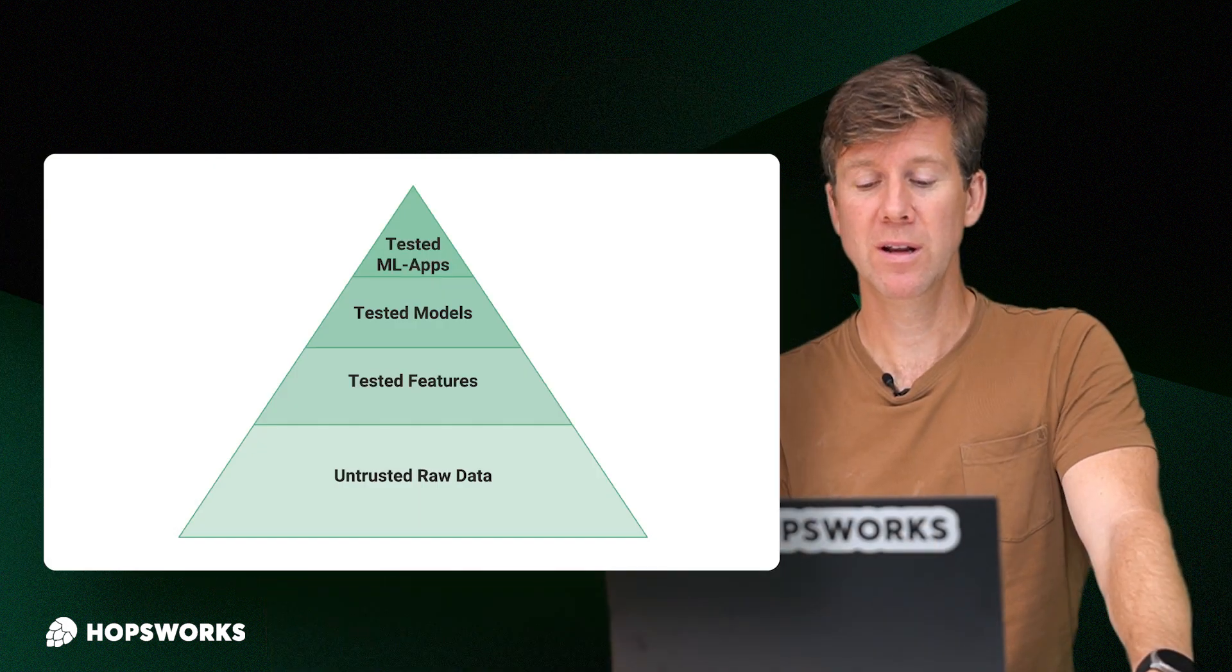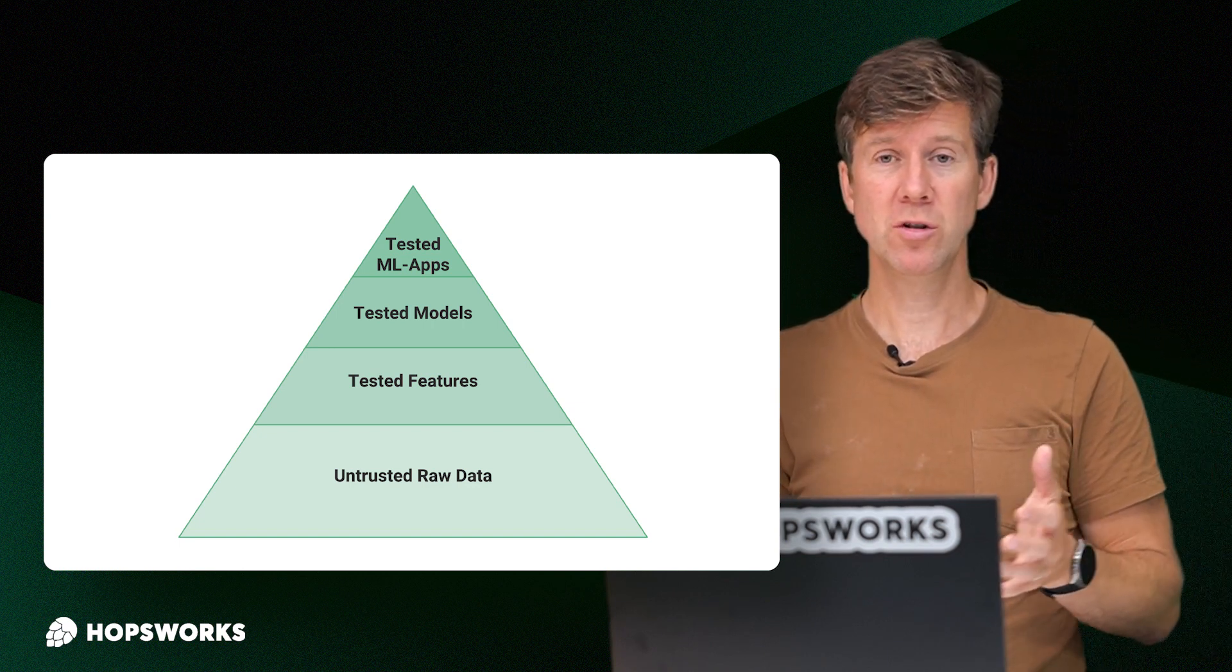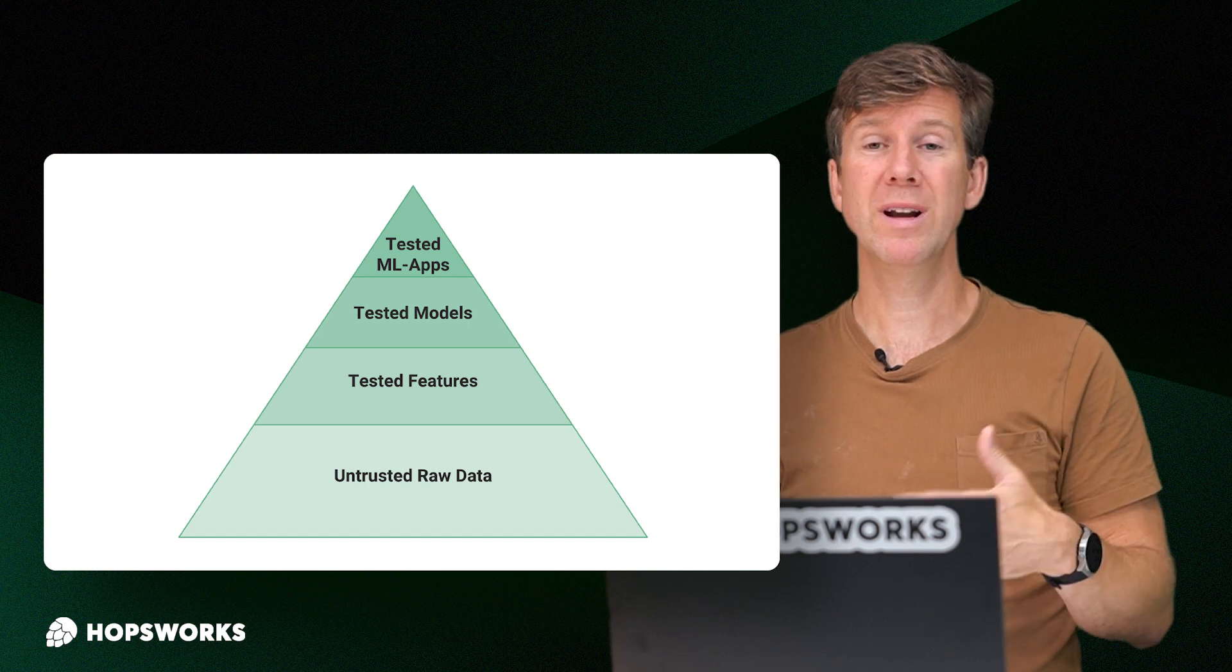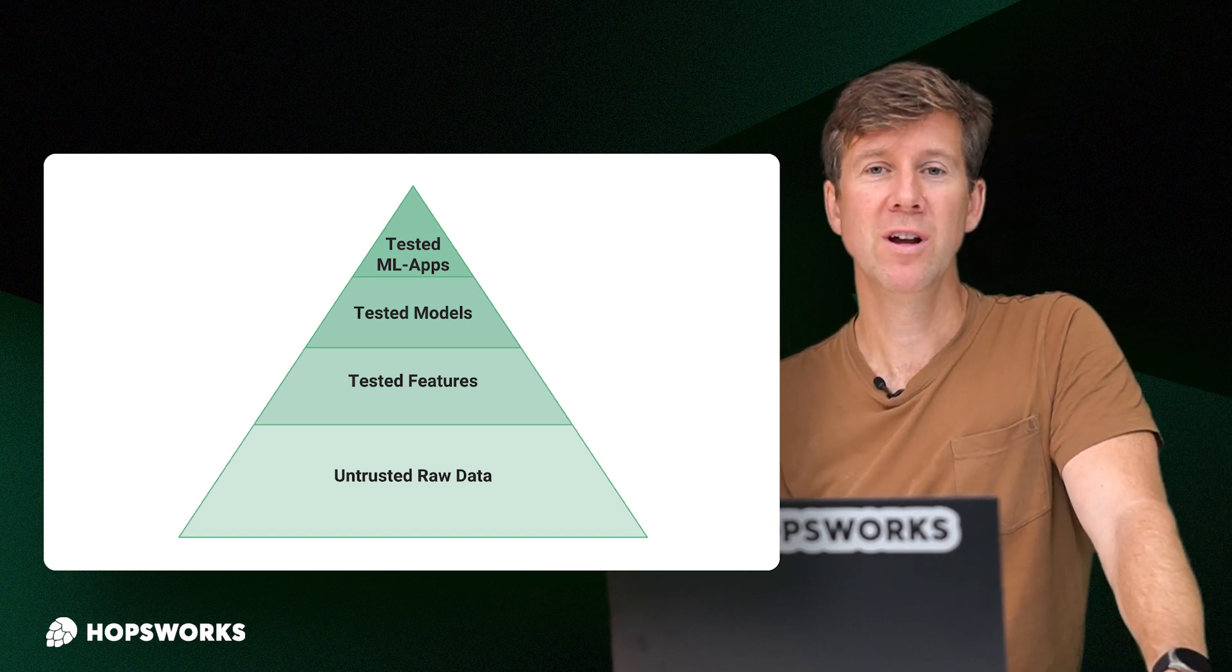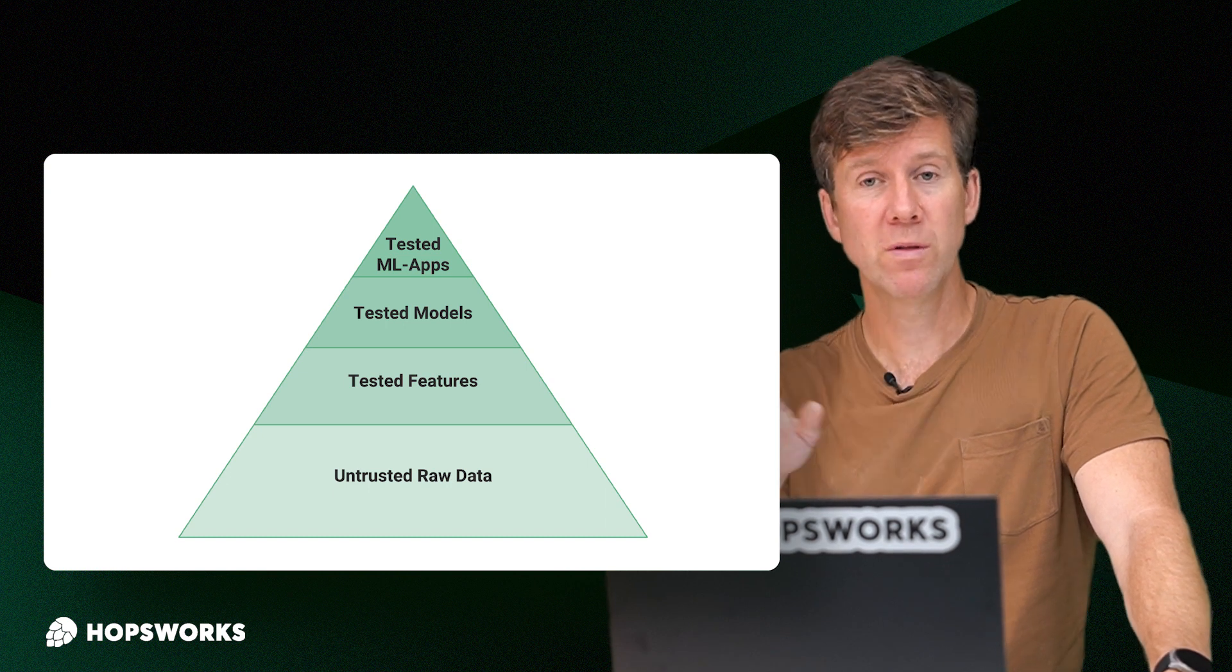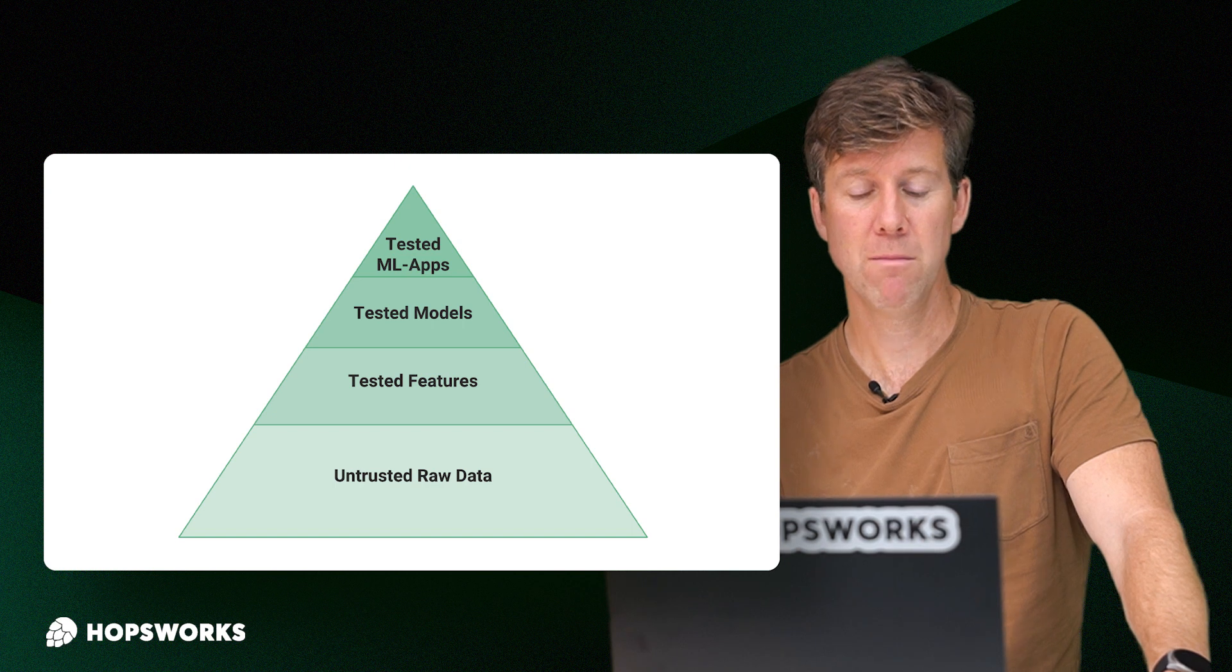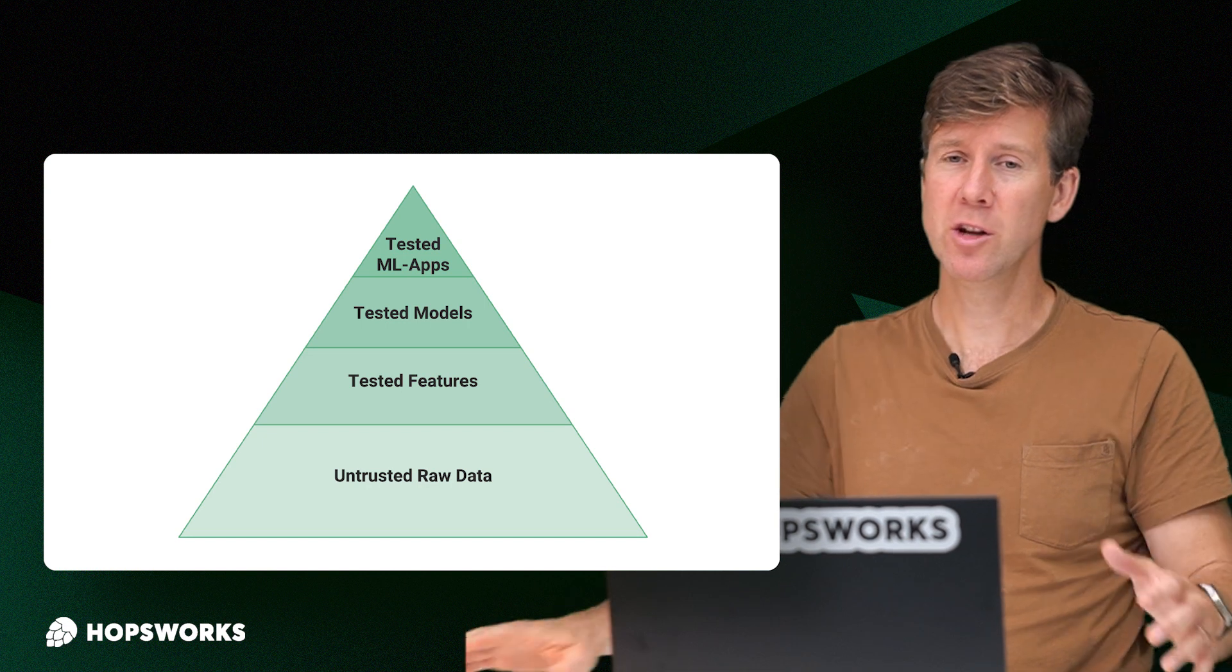This is really a testing pyramid. You need to test the raw data and make sure that that data is correct. We have a framework in Hopsworks called Great Expectations, which is very popular in both Python and PySpark for validating the data before it's written into the feature store. So following the no garbage in model. Once you have your features, your data in there, and you've tested it, you may want to test the features that are used to create the functions used to create those features, because those functions are effectively a contract.